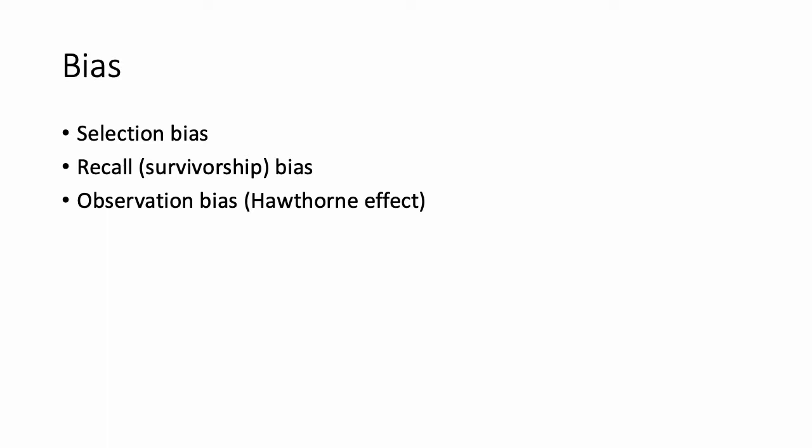Observation bias, or the Hawthorne effect, is when study participants behave differently when they're being observed in a study, and that may influence the results of the study.